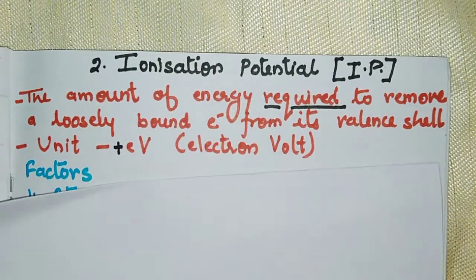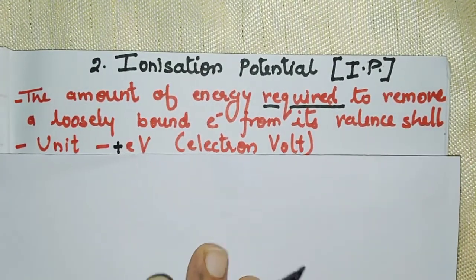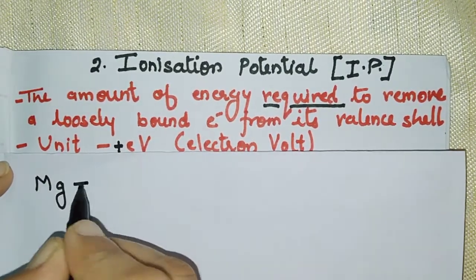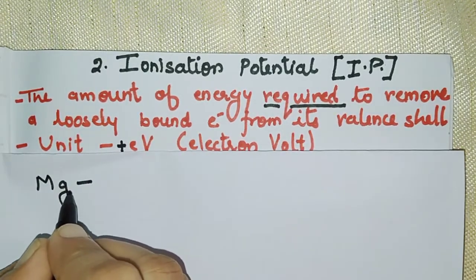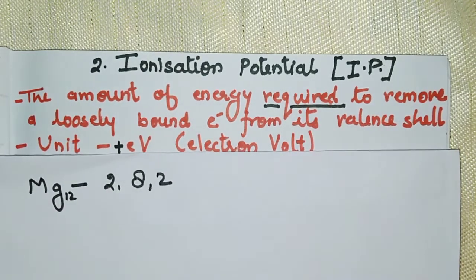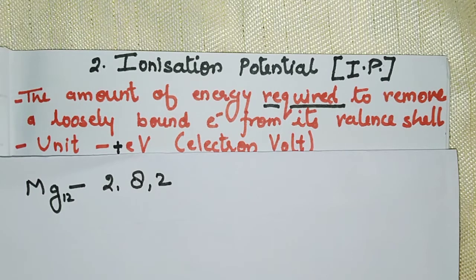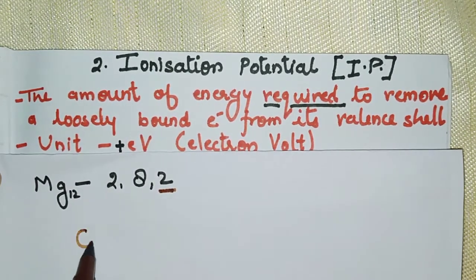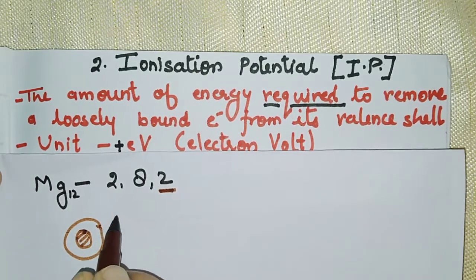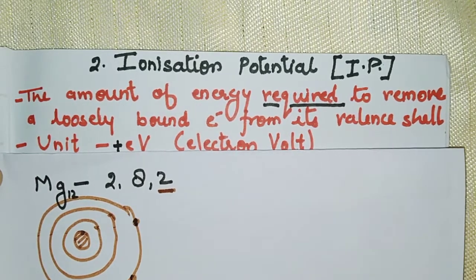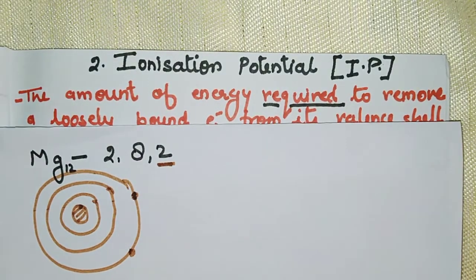Taking magnesium as our example — its atomic number is 12, so its electronic configuration is 2, 8, and 2. If we draw its structure, we have the nucleus at the center, with the first shell having 2 electrons, the second shell having 8, and the outermost shell having 2 electrons.